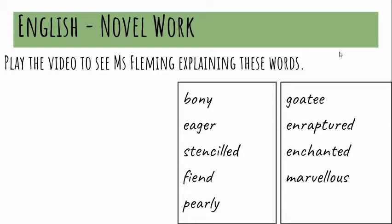Then we have three words: enraptured, enchanted, and marvelous. Enraptured means if someone is enraptured, they're totally entranced by something — they can't take their eyes off it and they can't stop thinking about it. Enchanted has a similar meaning; if you're enchanted by something you're like, might be under a spell.